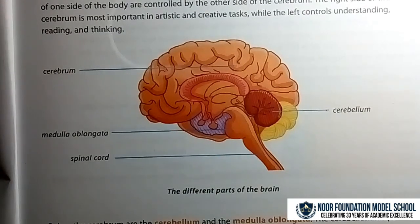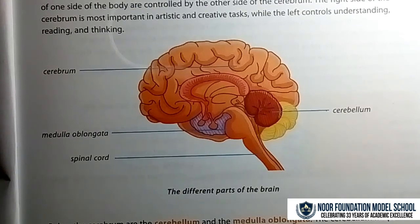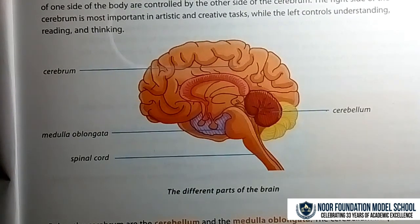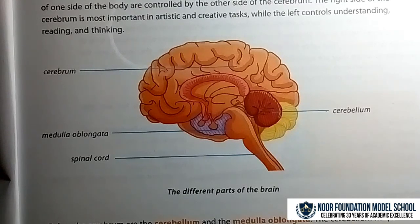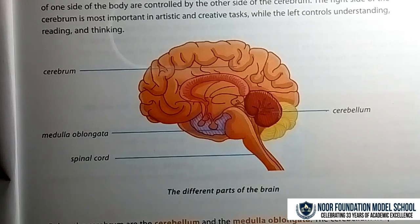The most complicated part is the cerebrum, which has two halves called cerebral hemispheres. Students should read this part very carefully and understand the functions of the cerebrum, medulla oblongata, spinal cord, and cerebellum.